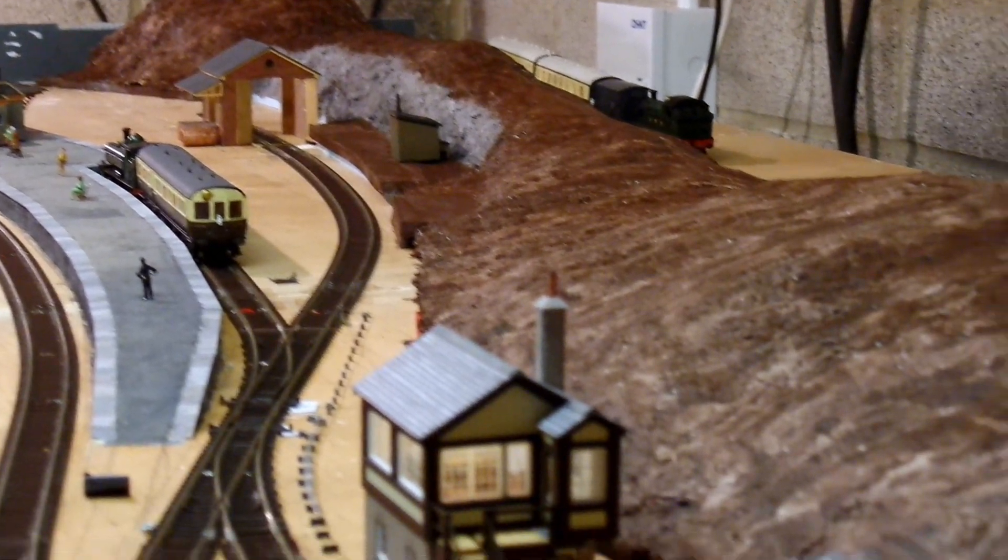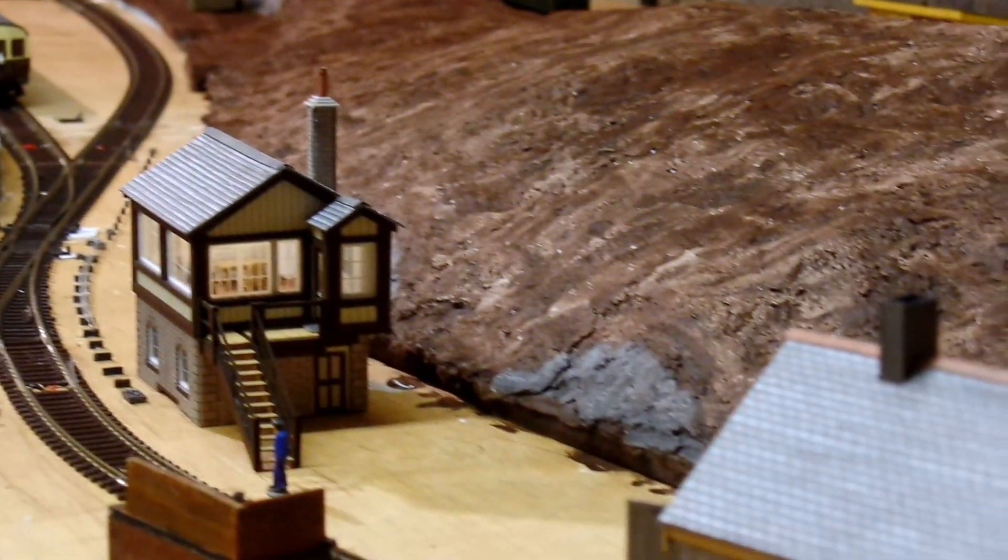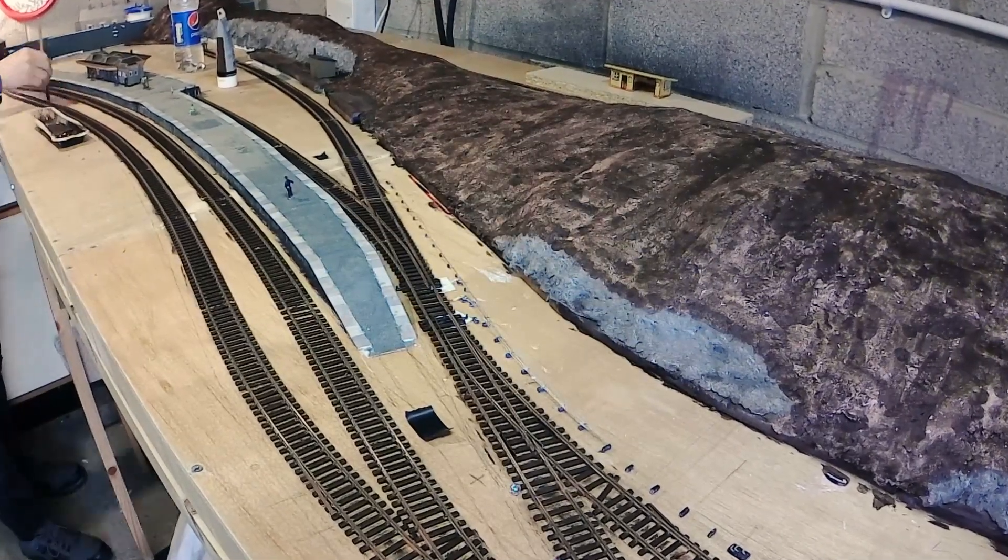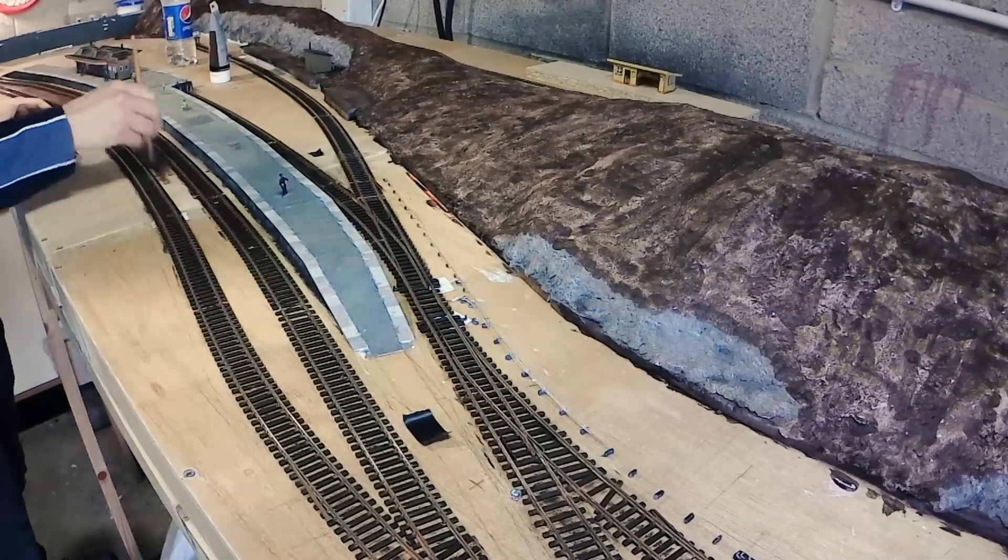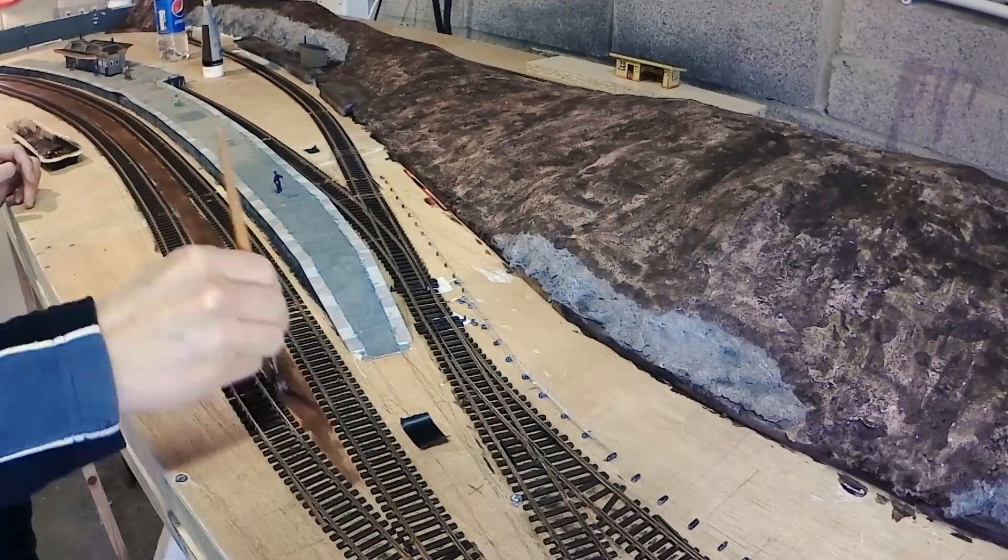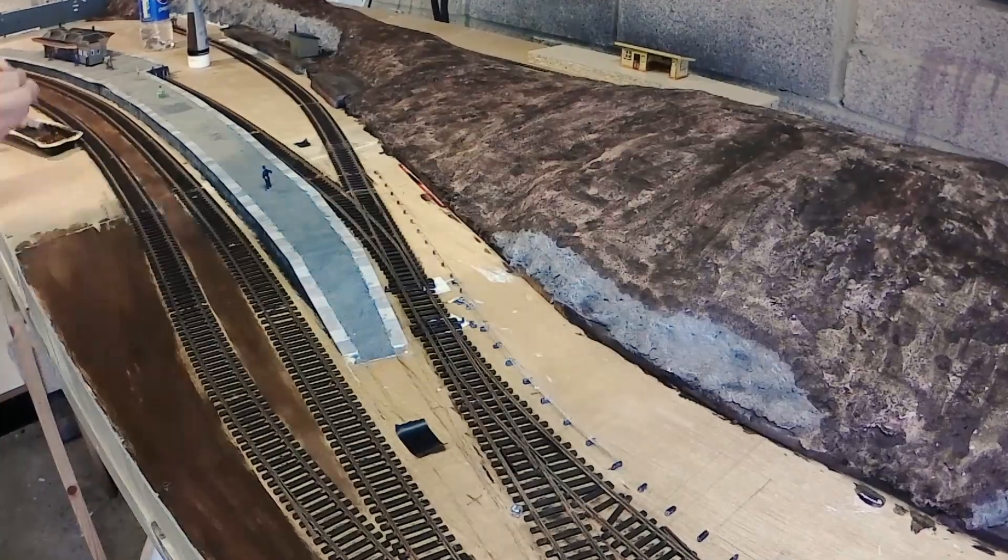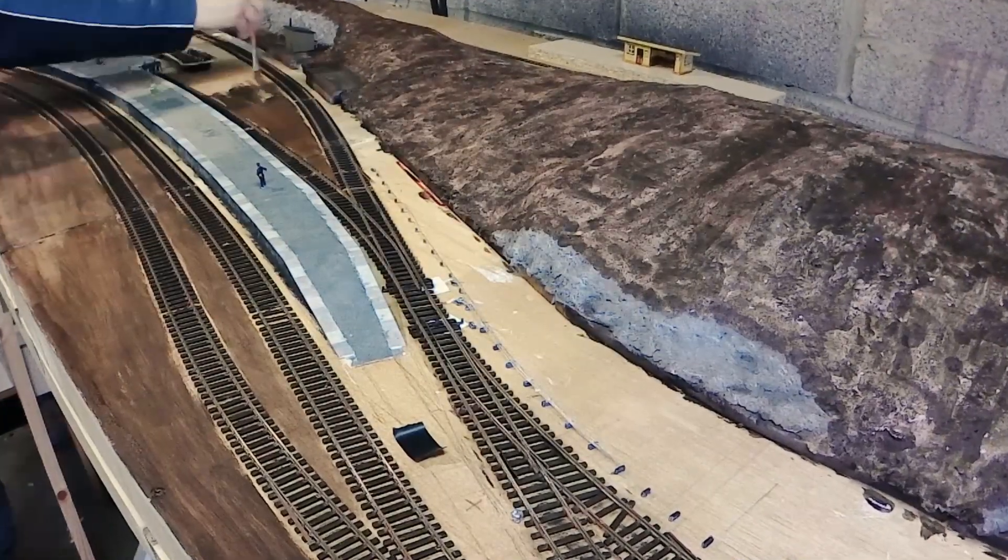And with the hill in place, I decided the wooden baseboard really needed a coat of brown paint too. Eventually that'll all be covered over with something more convincing, but in the meantime it would be nice not to see the wood grain in all my photos. So a coat of brown acrylic did the job nicely.